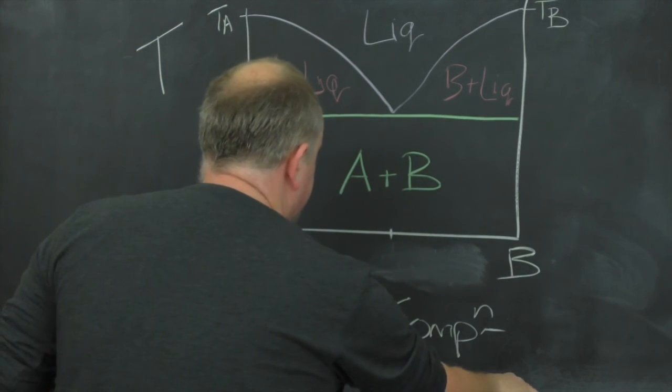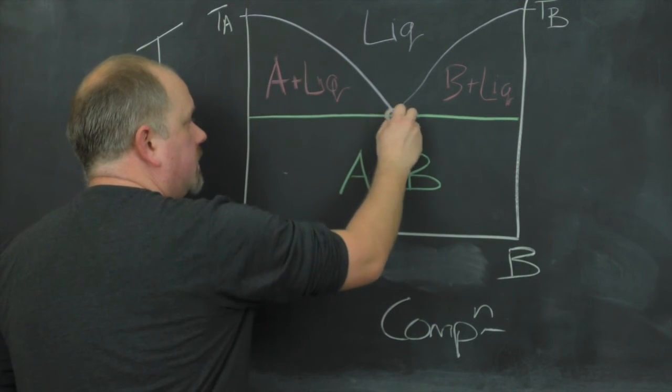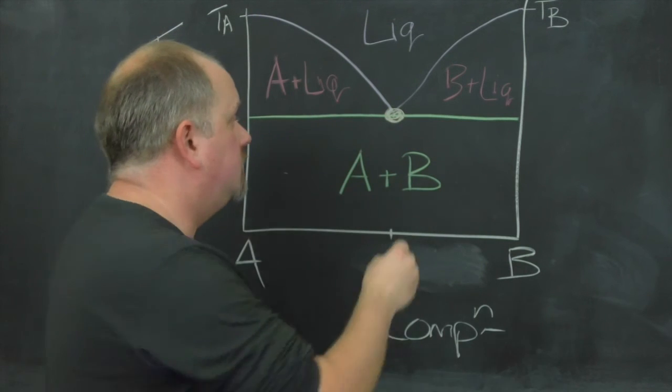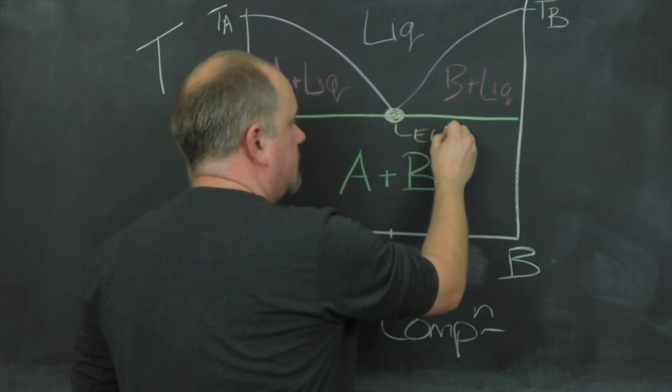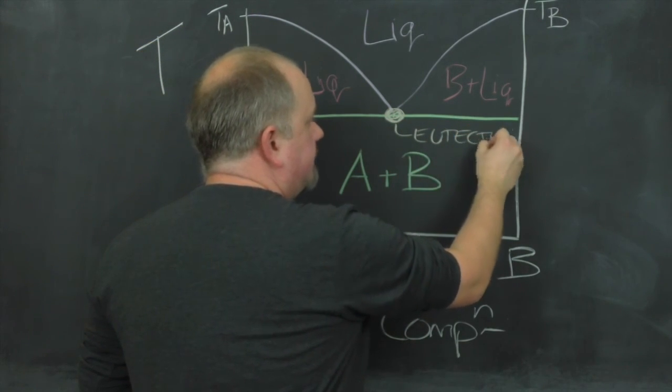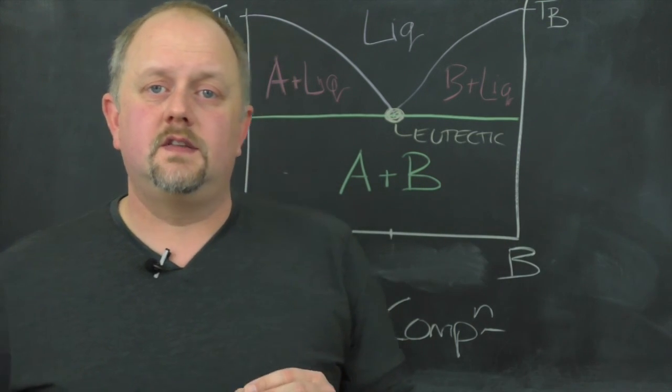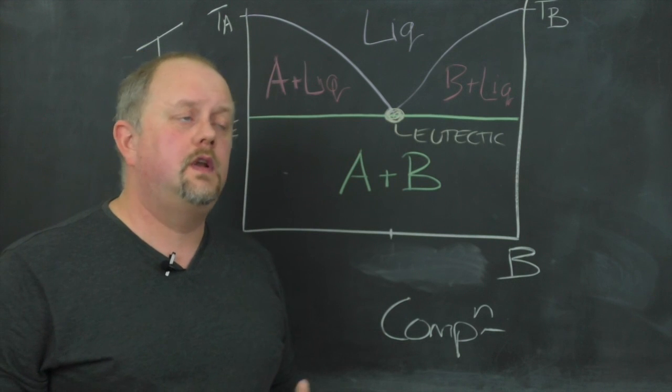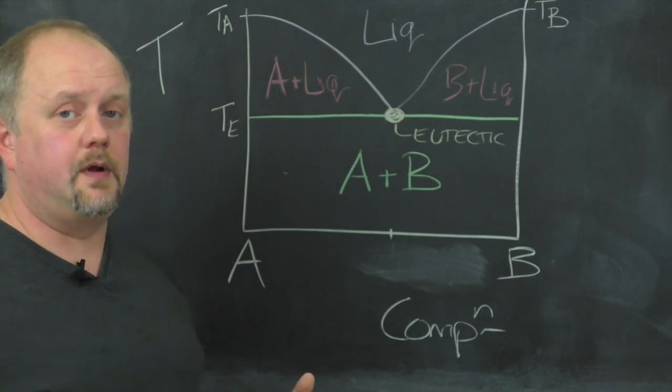In the middle here, which I'm marking yellow, at some temperature TE, we have what's called our eutectic point. The eutectic represents an invariant point where A, B, and liquid all coexist together in equilibrium.